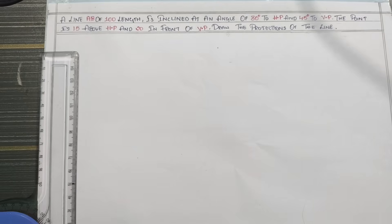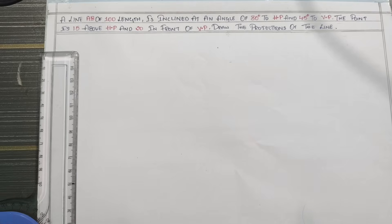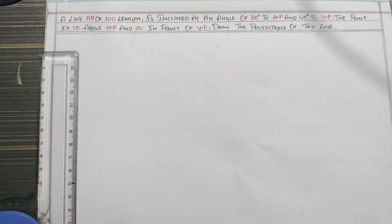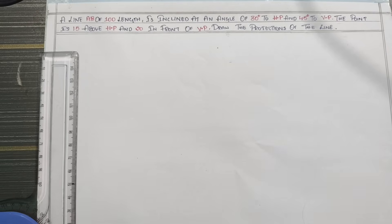Hi students. This is a projection of lines. The important question is: a line AB of 100mm length is inclined at an angle of 30 degrees to HP and 45 degrees to VP.